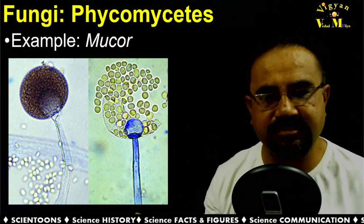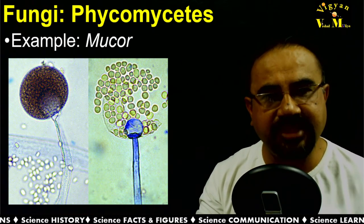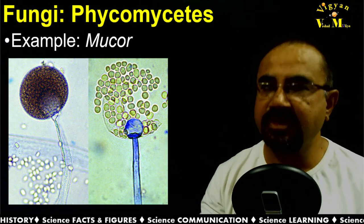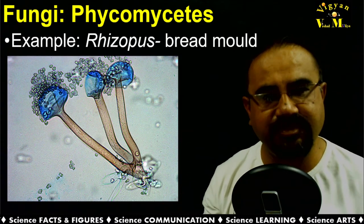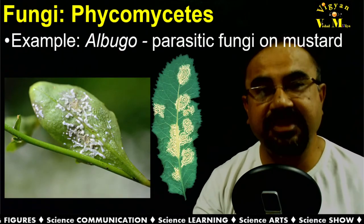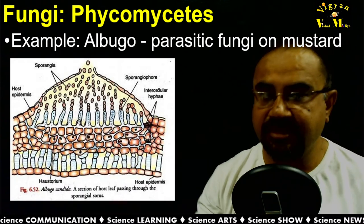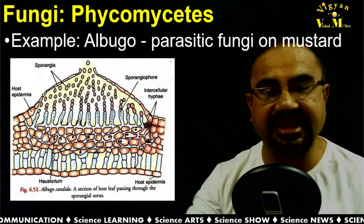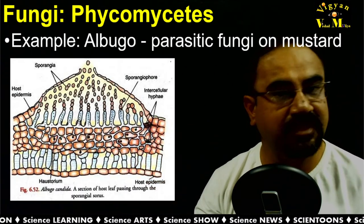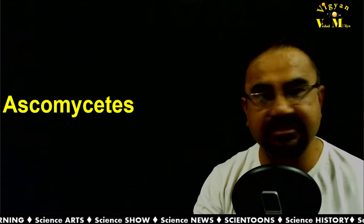Here you can see Mucor with its sporangium and spores. Rhizopus — bread mold — can be seen here, and Albugo, the parasitic fungi on mustard, is also visible with its structural detail in sectional view. The next class we are moving to is Ascomycetes.